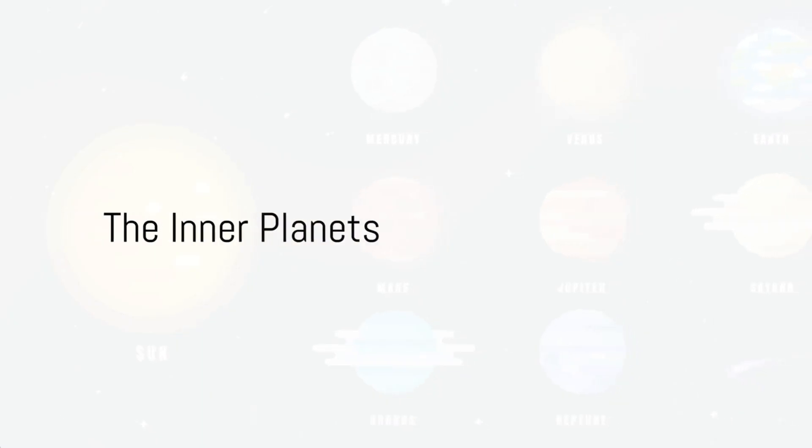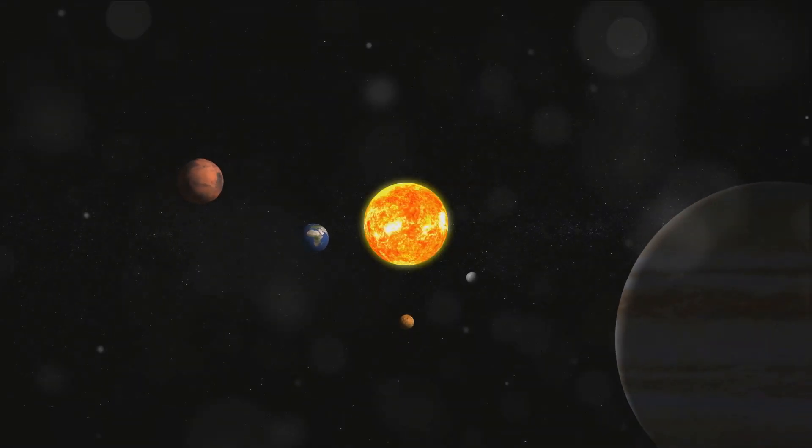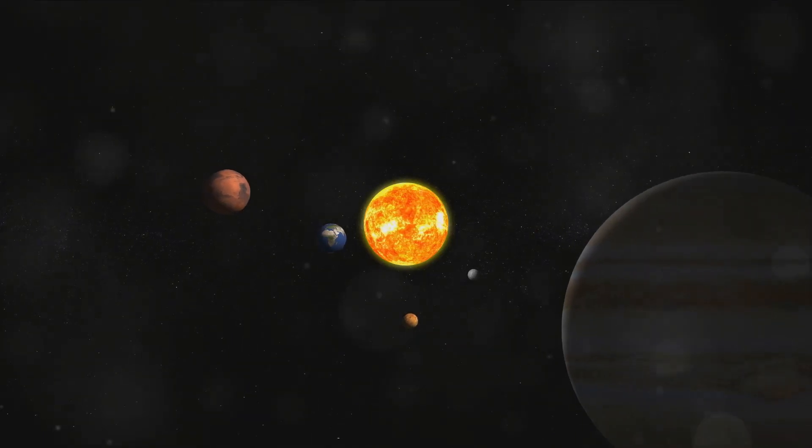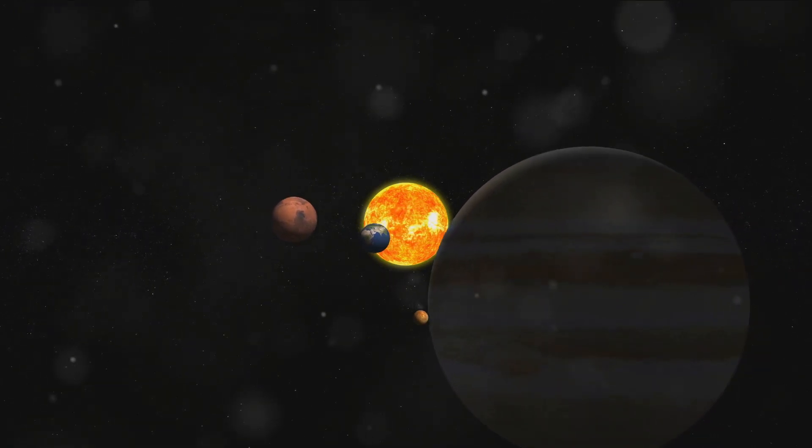Next to it is Mercury, the closest planet to the sun, a small rocky world scorched by solar radiation. Venus, our second stop, is similar in size to Earth but with a runaway greenhouse effect that makes it the hottest planet in the solar system.